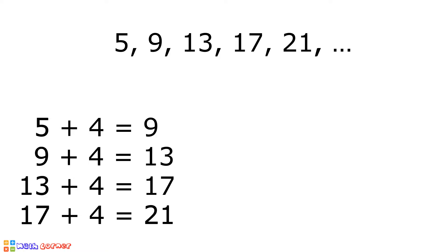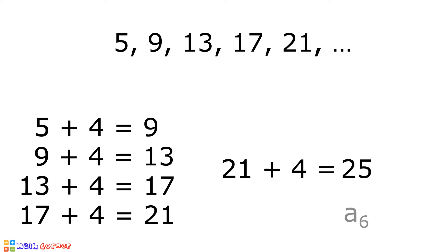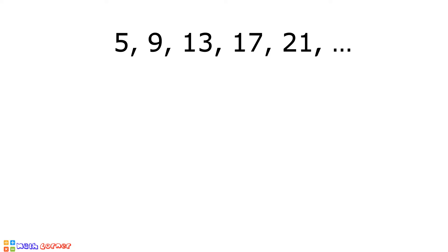To determine the next term of this sequence, we have to add 4 to 21, and the next term of this sequence is equal to 25. And since there is a common difference in this sequence, this is an example of arithmetic sequence. To determine the common difference, all we have to do is to subtract any two consecutive terms of this arithmetic sequence.